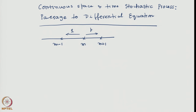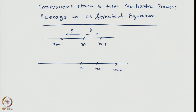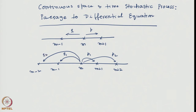We did not consider any multiple site transitions, but it is possible to extend very easily — instead of nearest neighbor, let us say two-neighbor transitions. A random walker at site m can have an upward transition to m plus 1 and also to m plus 2 with different probabilities. Similarly, he can transit downwards to m minus 1 or to m minus 2 with different probabilities. All that we have to do is postulate a probability p1 for one step and p2 for two steps, and similarly q1 and q2, subject to constraints depending on whether it is a symmetric or biased random walk.